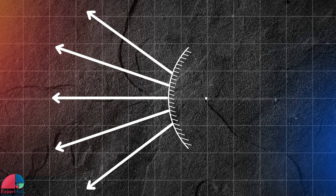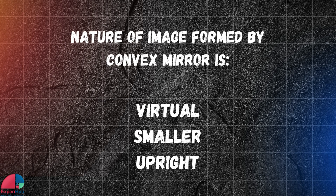Here's an important point: the reflected rays appear to come from a point behind the mirror. This point is called the focal point. So when we look into a convex mirror, the image we see is actually a virtual image — this means it can't be projected onto a screen because the rays don't actually meet. The image is also smaller and upright.